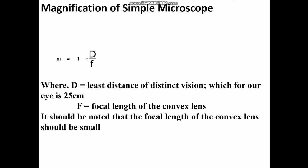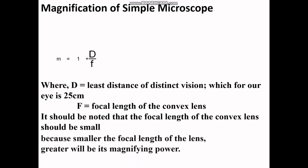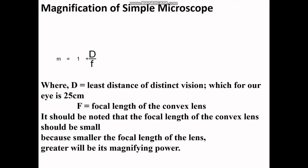Here it should be noted that focal length of convex lens should be small and you can guess why. You can see the relationship M is equal to 1 plus D upon F. If F is small, obviously the magnification will be more. Because smaller the focal length of the lens, greater will be its magnifying power.